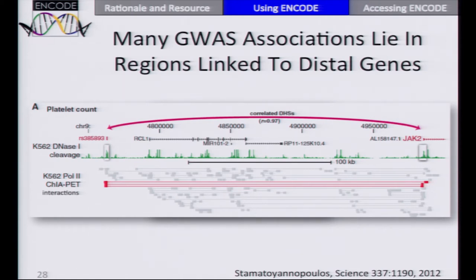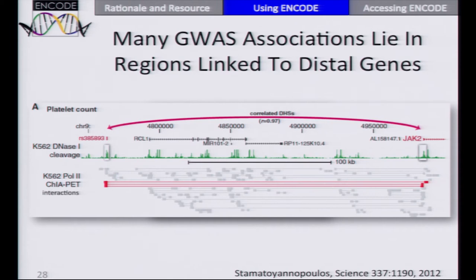Here's a concrete example: a variant associated with platelet count, with an arrow going to a gene five genes away, JAK2. If your research program moved through genes sequentially, it might be many years before you got to the forecast target gene. But in part based on regulatory signatures and DNA-DNA interactions from ENCODE data, one can predict this variant might be associated with JAK2. This is transformative — instead of studying RCL1 involved in RNA 3-prime processing, we already know JAK2 is a tyrosine kinase in a well-studied pathway with small molecules that regulate it.